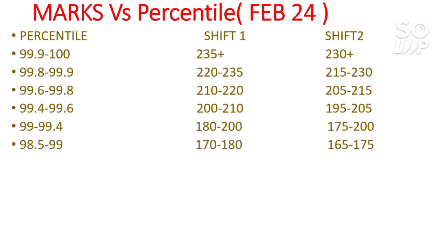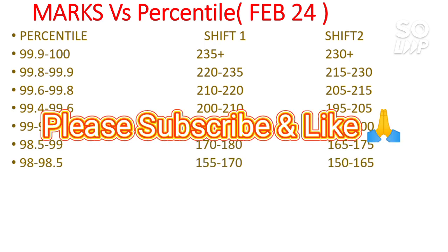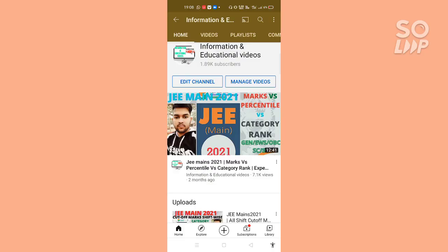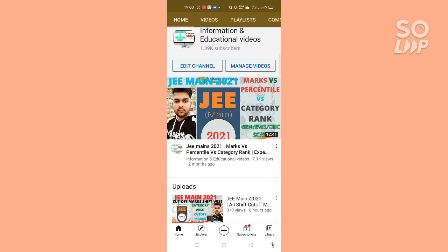For 98.5 to 99 percentile you need to score 170–180 marks, and five marks less for Shift 2. For 98 to 98.5 you need 155–170 marks and for Shift 2 it's 150–165. This data is very accurate — please share this video with your friends. You can also check my video on percentile versus category rank, which covers General, EWS, OBC, SC, ST ranks for a given percentile.